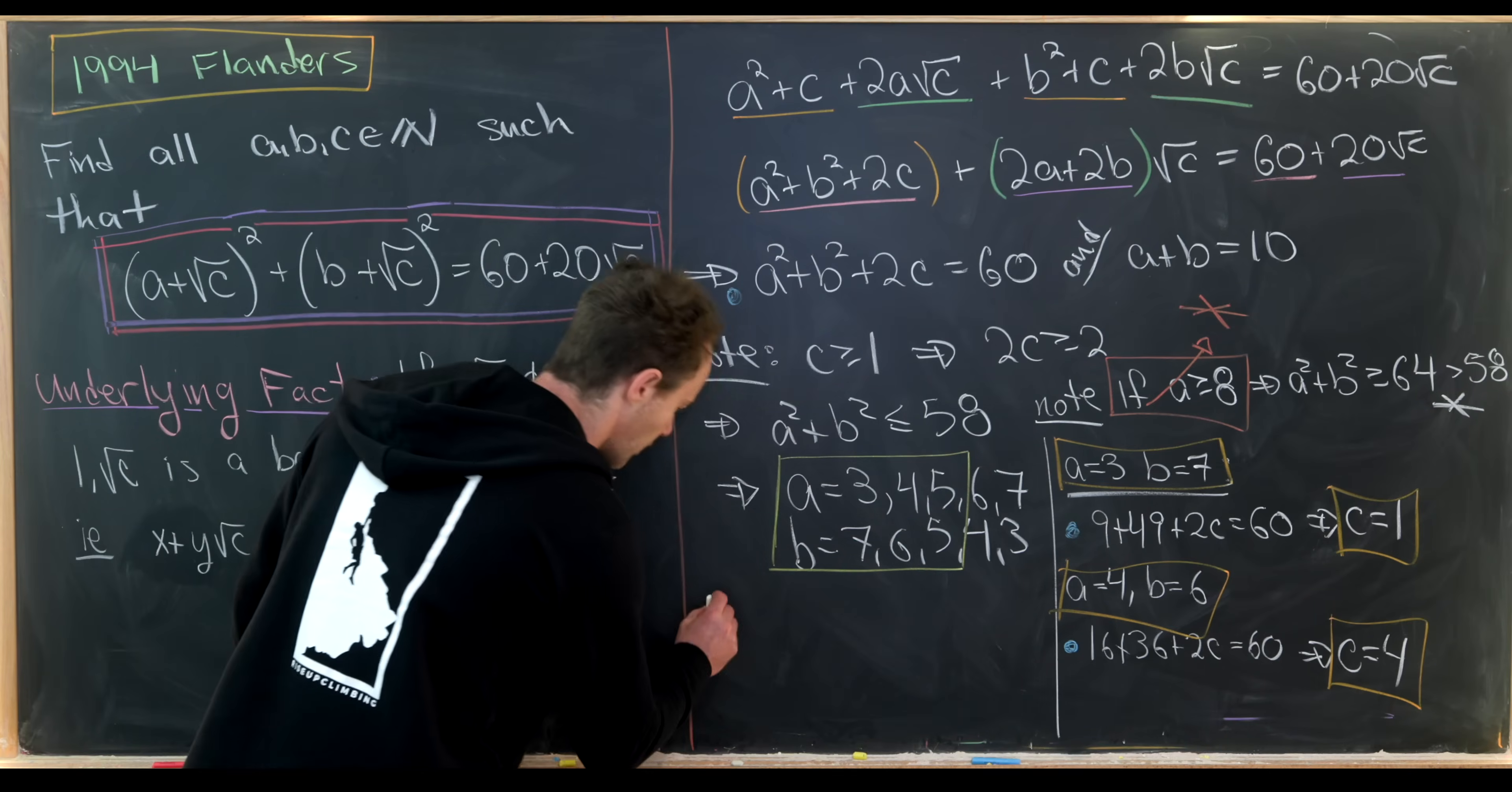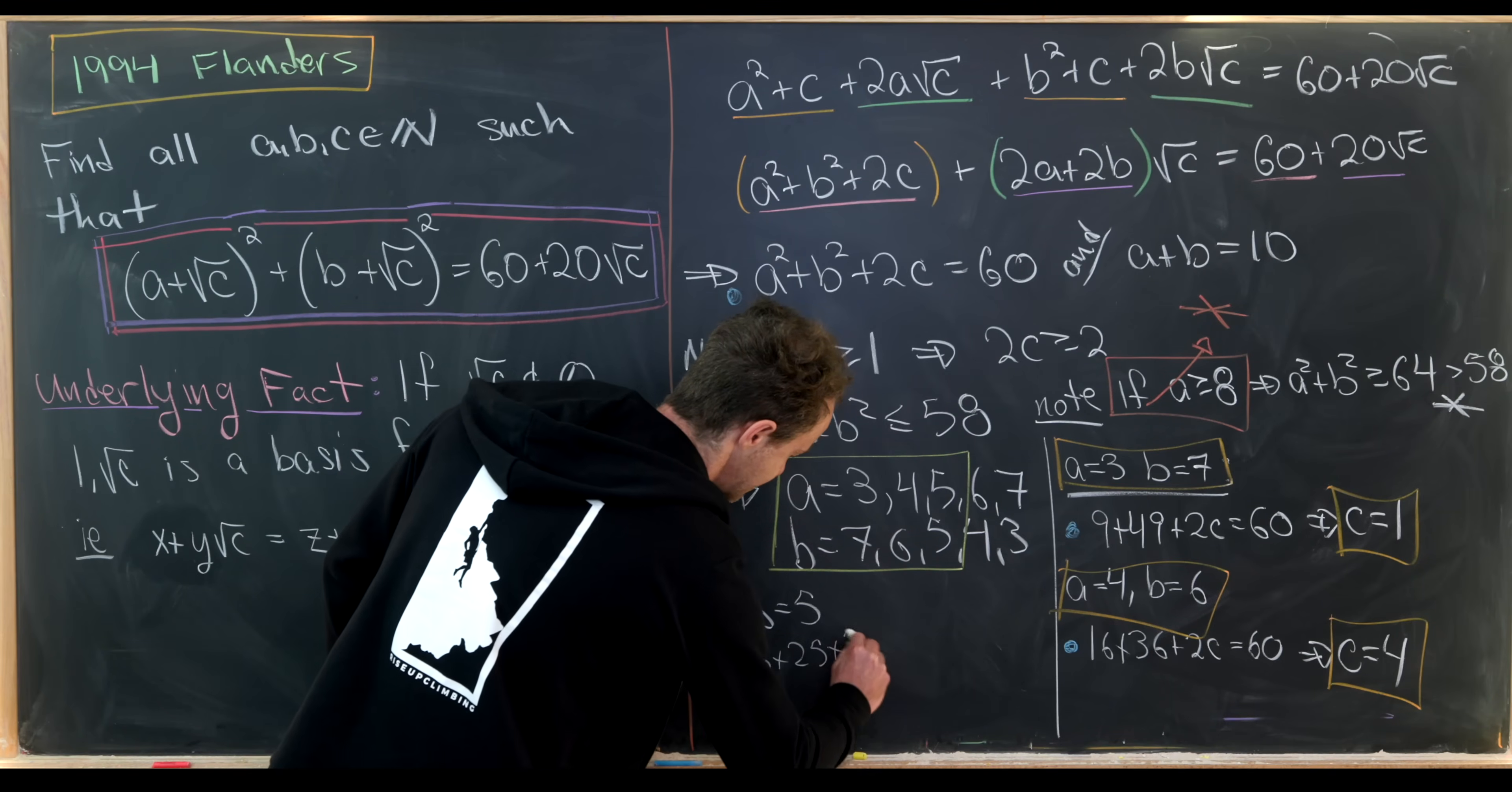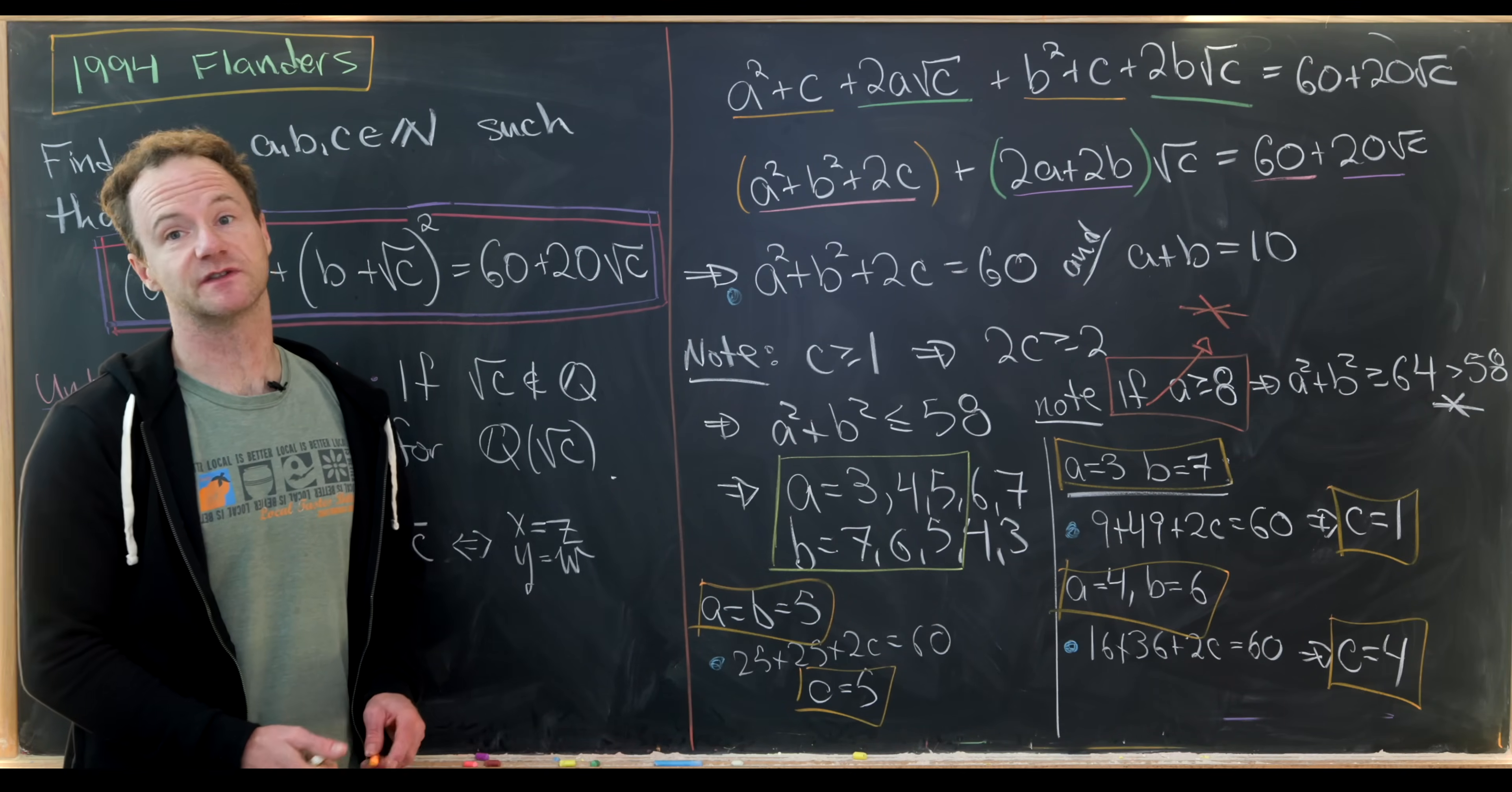And that leaves us with one more, which would be the case when a equals b equals 5. And what does the blue dot collapse to here? So we'll have 25 plus 25 plus 2c equals 60. So in the end, we'll get c equals 5. So this is maybe the most symmetric solution because all of our a, b, and c are equal to 5.